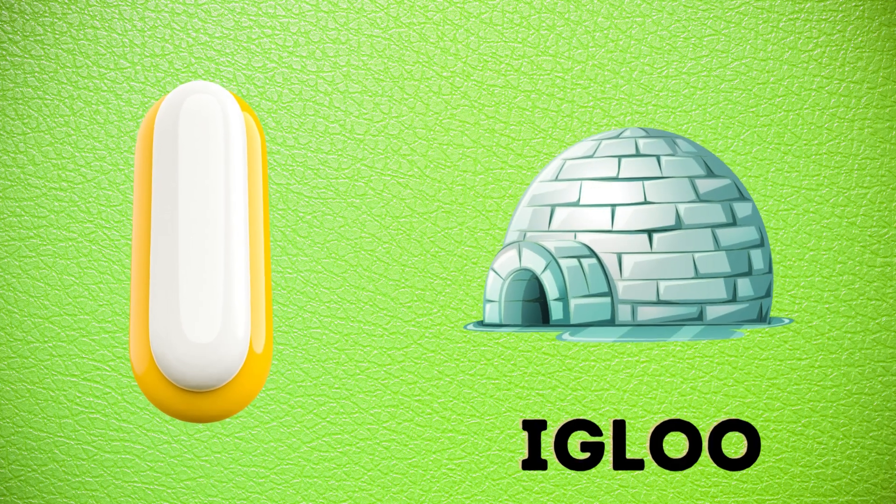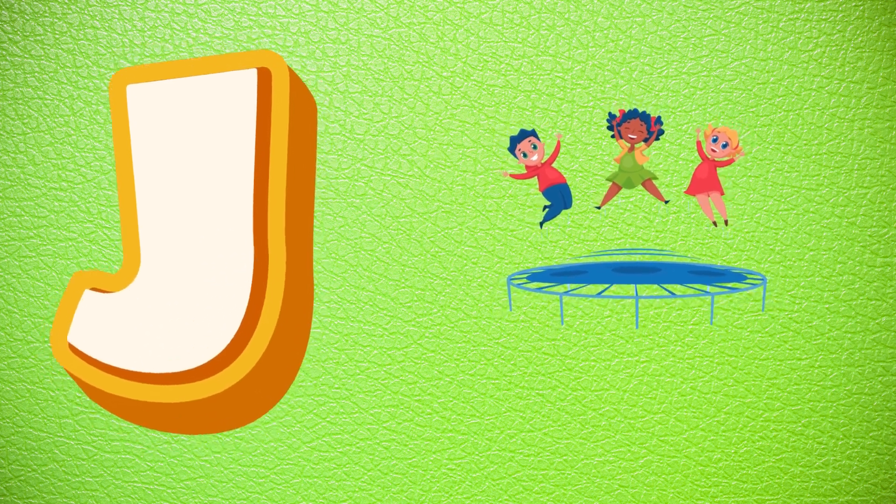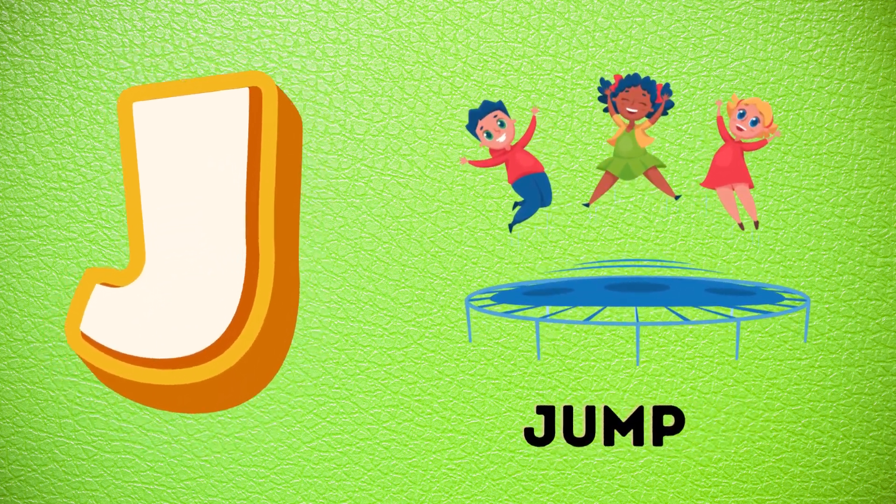I is for igloo, i-i-igloo. J is for jump, j-j-jump.